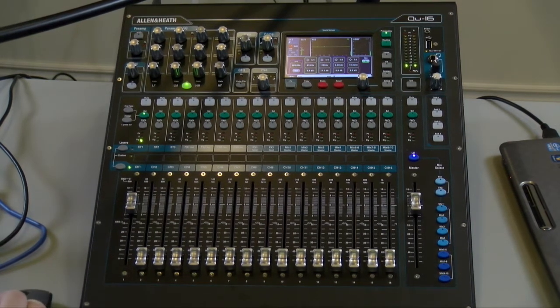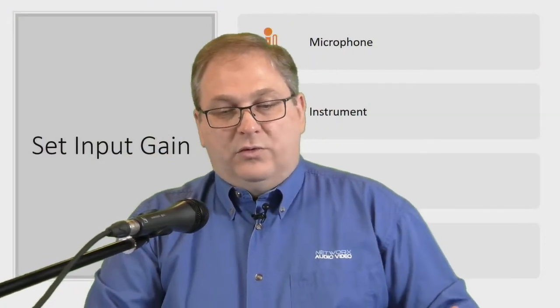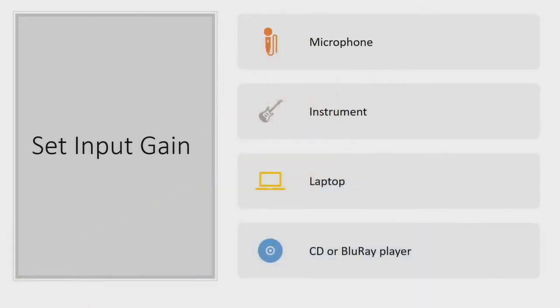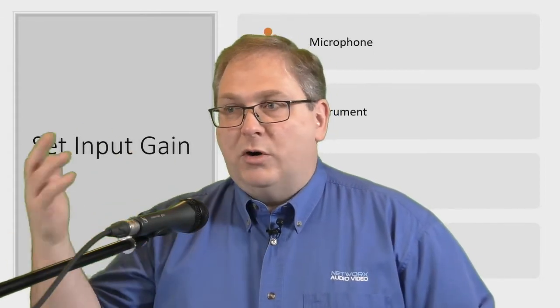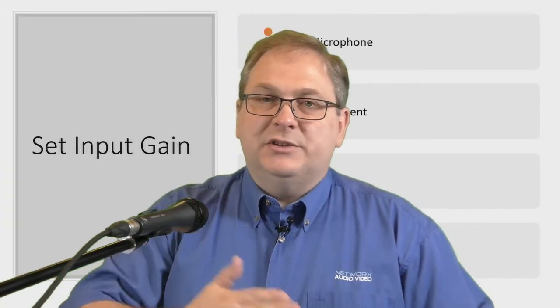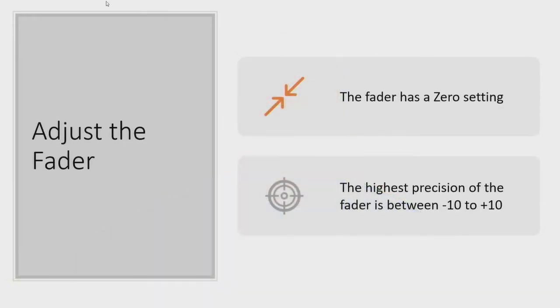Now switching to the Sennheiser E835, you can hear me at about three inches from the microphone with input fader at zero, output fader at zero, and the gain set up properly. This is a proper adjustment of the gain and the fader. The procedure for setting this up — whether it's a microphone, instrument, laptop, CD, or Blu-ray player — is pretty much the same. Use your PFL, look at the levels, and adjust accordingly. Remember: more gain for something like a microphone, less for a line input.